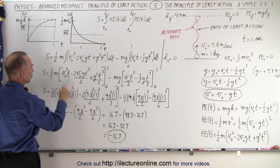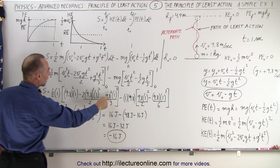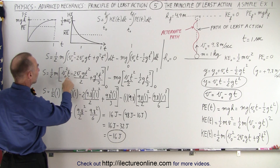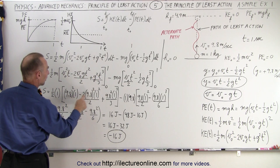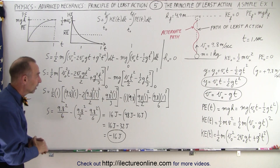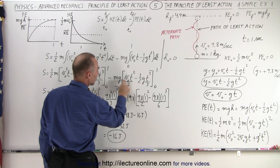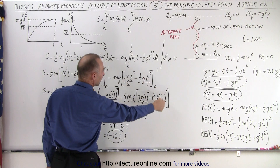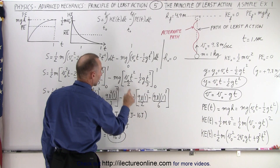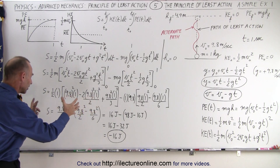Now let's plug in the values: mass is 1, v-initial is 9.8, and g is also 9.8. Time is replaced by 1, and plugging in the lower limit gives 0, so we don't have to worry about the lower limit. For the potential energy term: g is 9.8, mass is 1, v-initial is 9.8, g is 9.8, time is 1, and 2 times 3 gives 6 in the denominator, with 2 in the denominator for the other term — you can work through all of that.